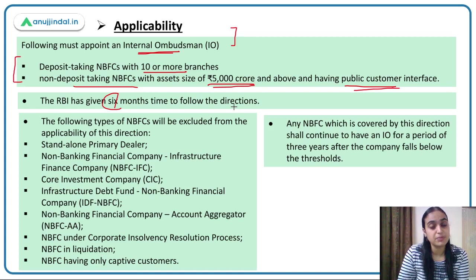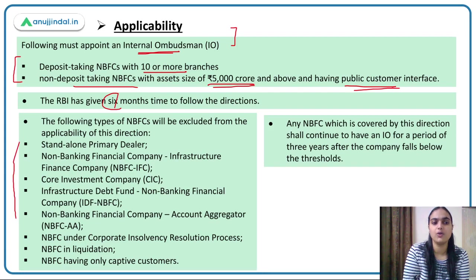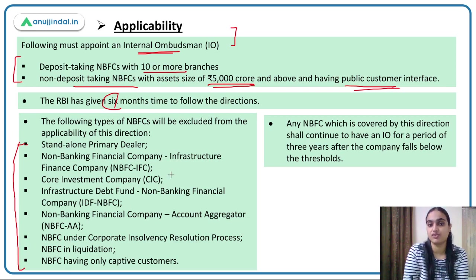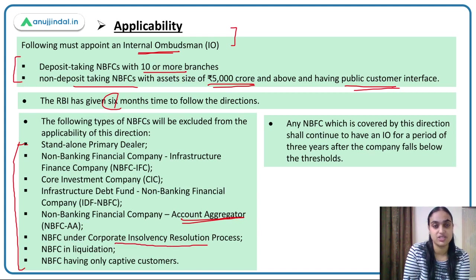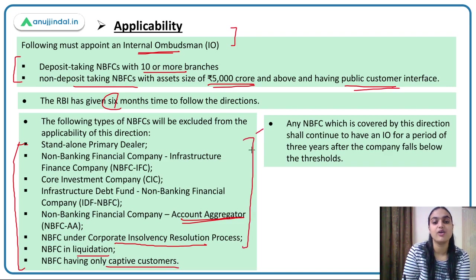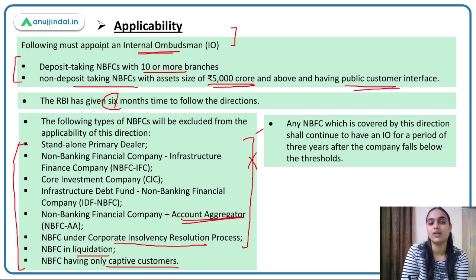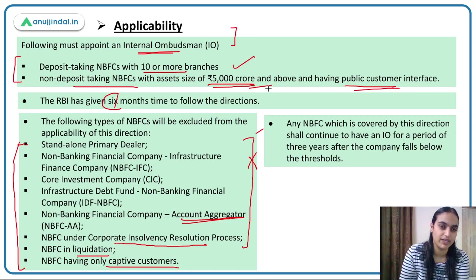Certain NBFCs have been excluded from this mechanism: standalone primary dealers, NBFC infrastructure finance companies, infrastructure debt fund NBFCs, non-banking finance company account aggregators, NBFCs under corporate insolvency resolution process, those under liquidation, or those with only captive customers. All deposit and non-deposit taking NBFCs adhering to the thresholds have to appoint an internal ombudsman. Any NBFC covered by this direction shall continue to have an IEO for three years even after falling below the thresholds.